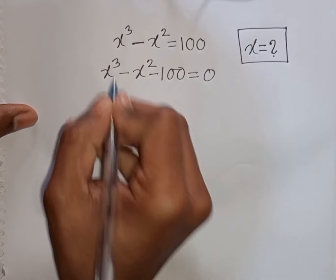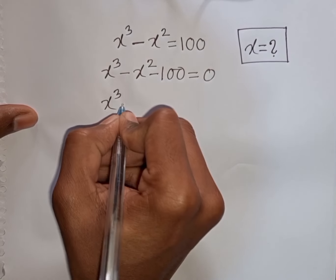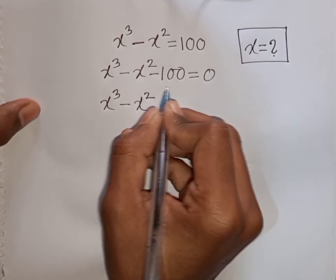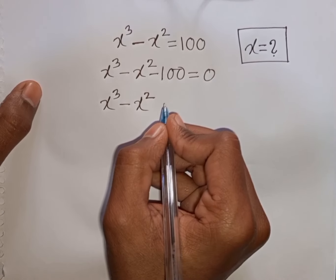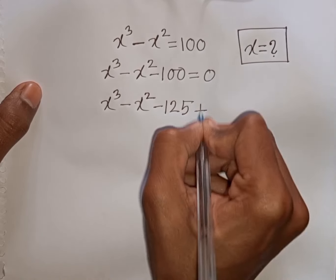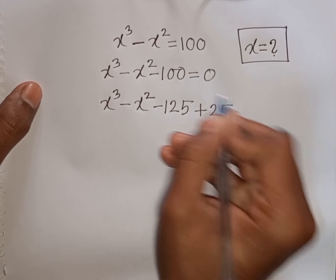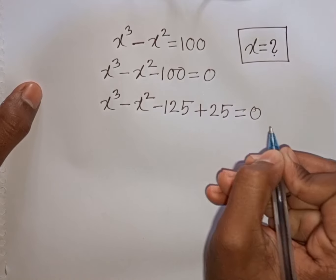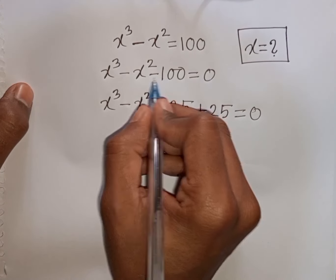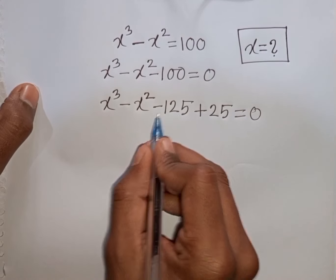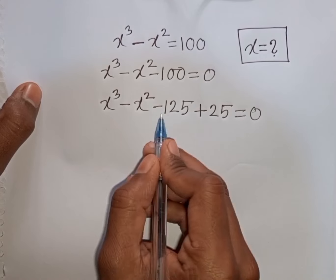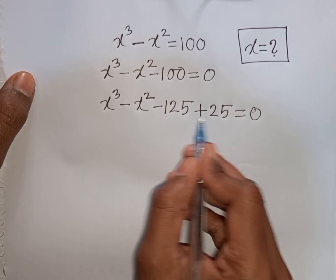Now we have x³ - x² - 100 = 0. Minus 100 can be written as minus 125 plus 25. How to understand this? Pay attention: the nearest cubic number to 100 is 125. So we can write minus 100 as minus 125 plus 25.